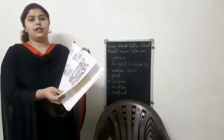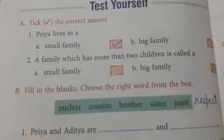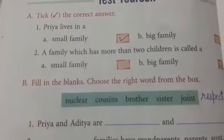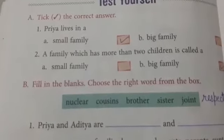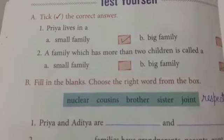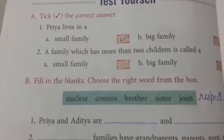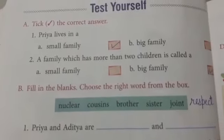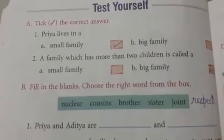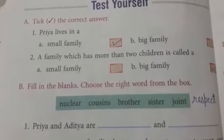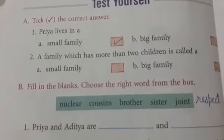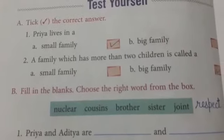And students, now turn the page. Point A is tick the correct answer. Number 1, Priya lives in a... Option A is small family. Option B, big family. So students, please tick option A — Priya lives in a small family.